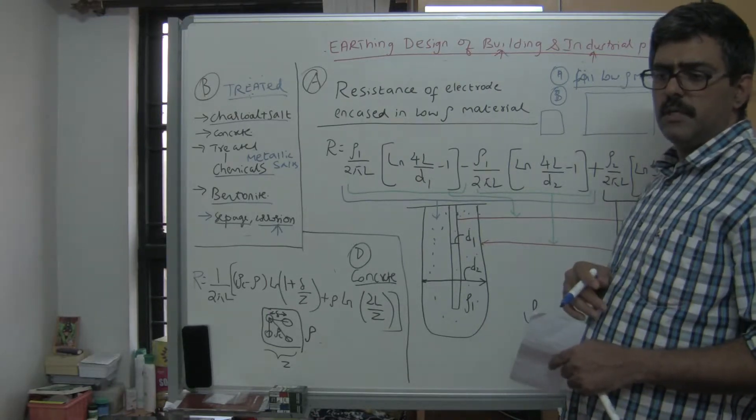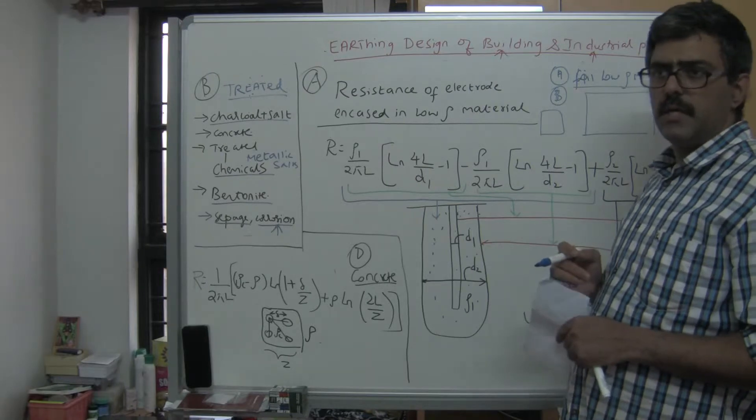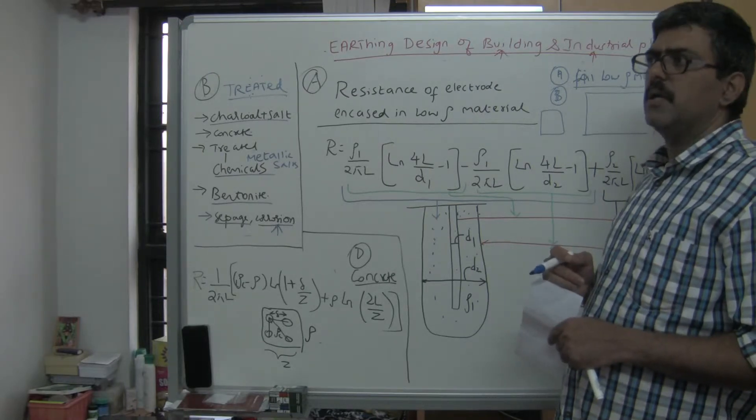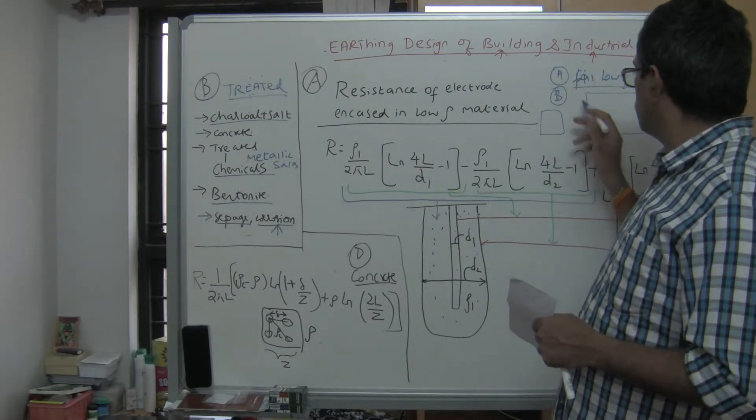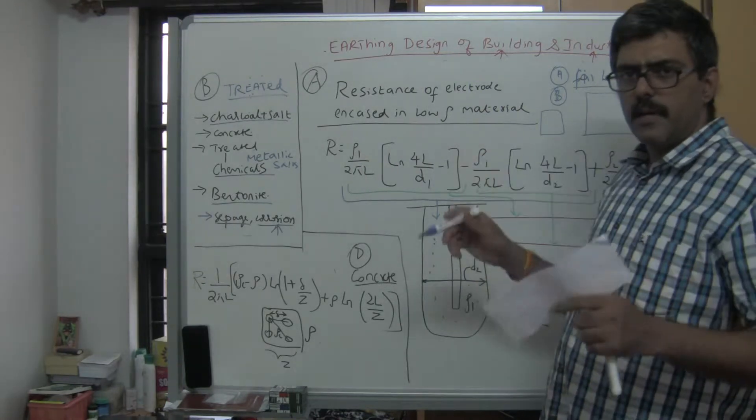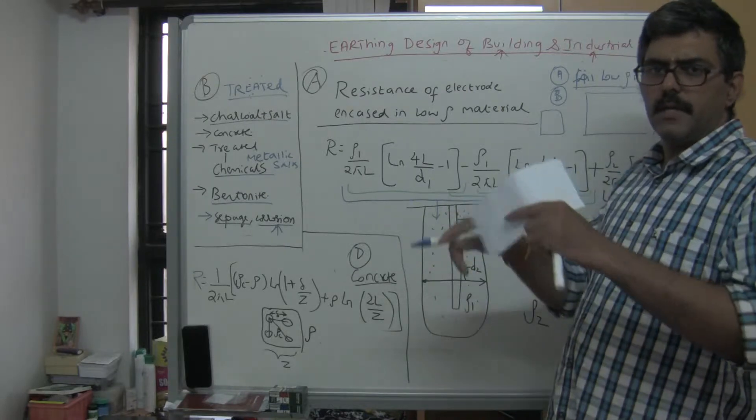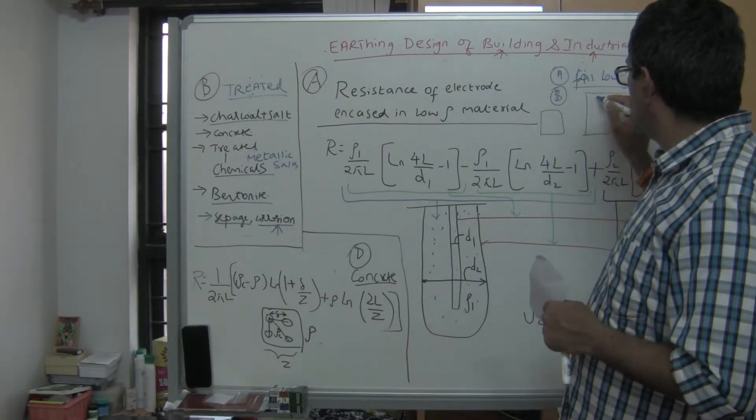But if I have a small substation and the soil resistivity is high, then I cannot achieve a low resistance earth grid. So one option is to go to a remote area where we get a large area and install an earth grid there.